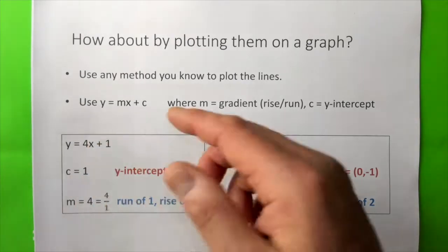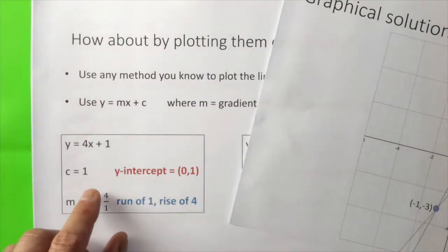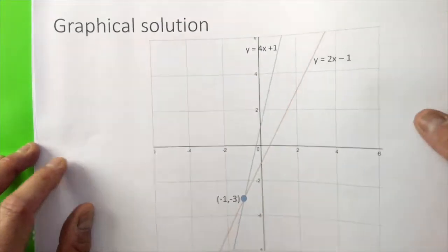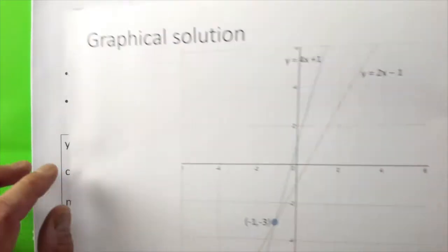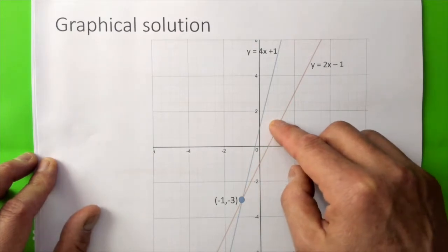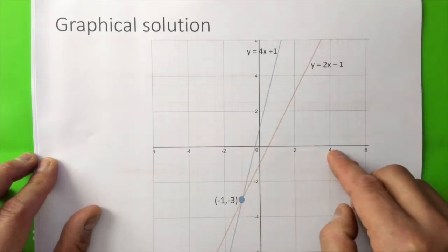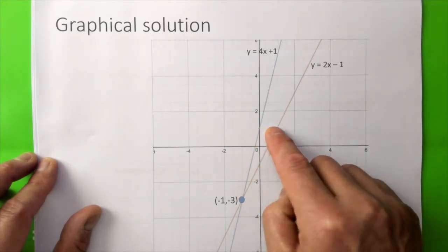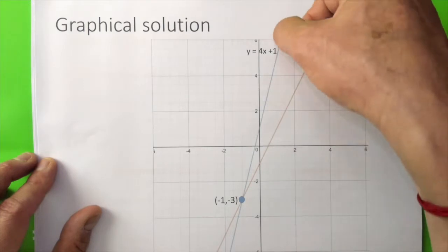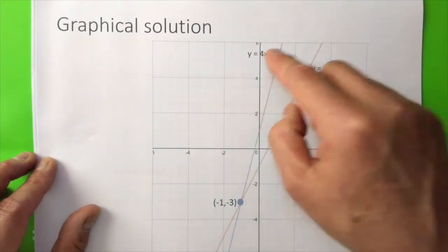Let's start with y equals 4x plus 1. We know the y-intercept is (0, 1), so when x is 0, y is 1. There is a run of 1 and rise of 4. Note the scale. From the y-intercept, a run of 1 (from 0 to 1) and a rise of 4 (from 1 to 5) allows us to draw the line y equals 4x plus 1.